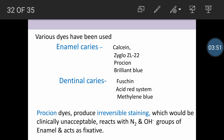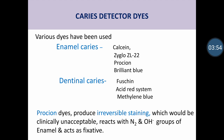Another method for detecting caries is the use of caries detection dyes. Various dyes are applied on the tooth surface to detect whether caries is extending only into the enamel or into the dentine. To detect enamel caries, dyes such as calcein, zyglobe, procion, and brilliant blue are used. For dentinal caries, fuchsin, acid red system, and methylene blue are used. However, procion dyes cause irreversible staining, which is not clinically acceptable, as during diagnosis we should not cause permanent damage or permanent staining to the tooth structure. These dyes should only help us assess the extent of caries.